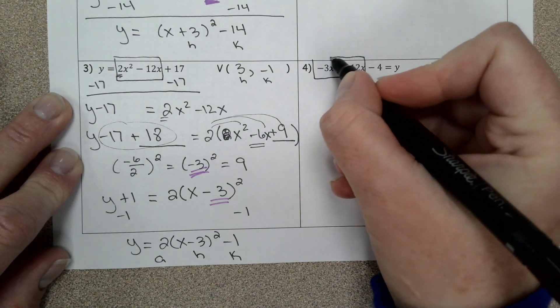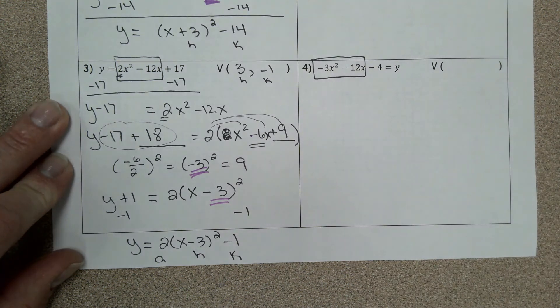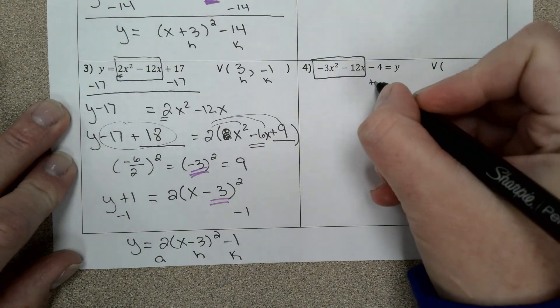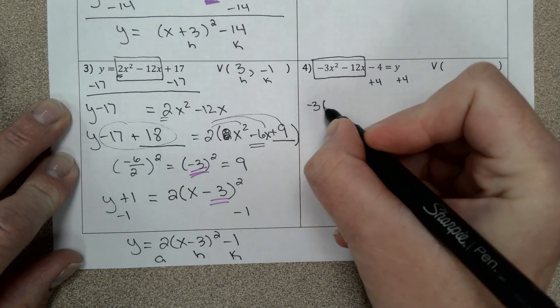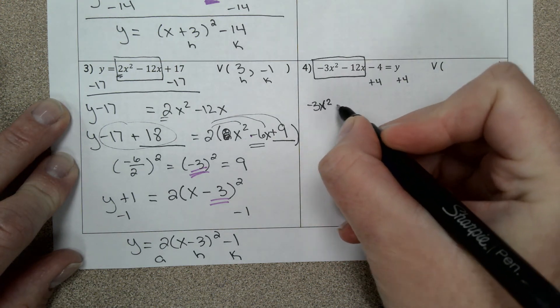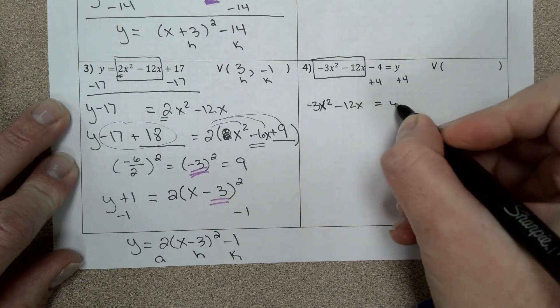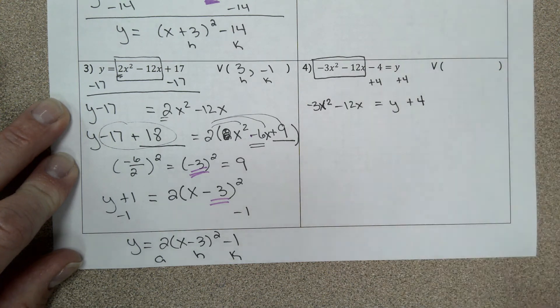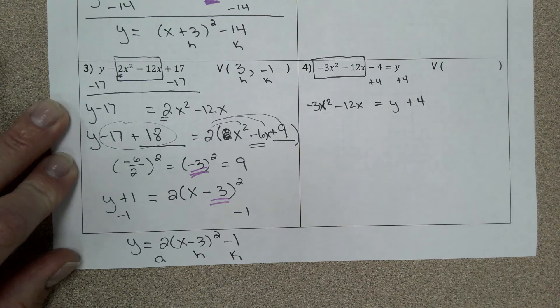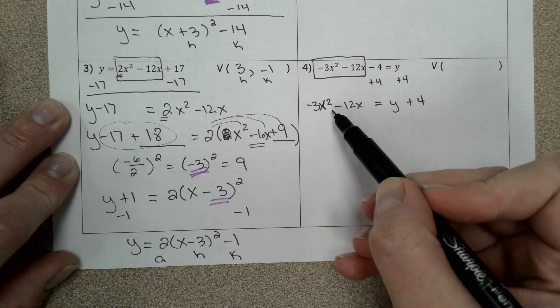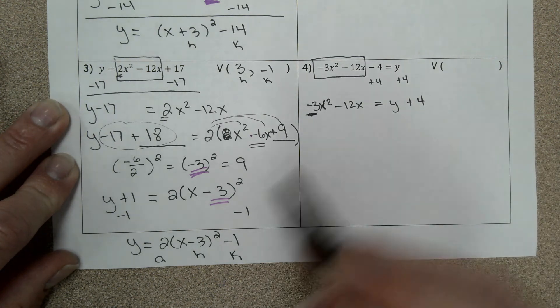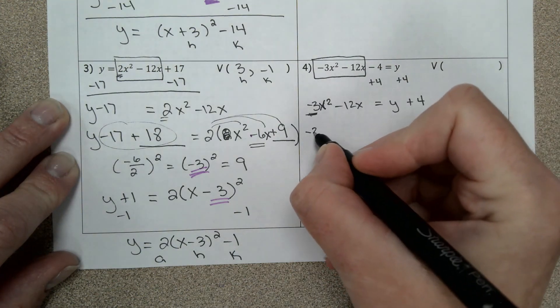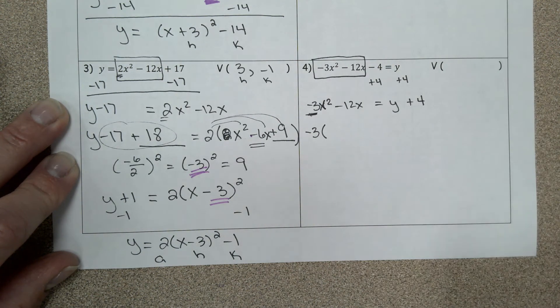Number four, we have the y on the right side. It's okay if that bothers you, you can switch it around. Step number one, isolate your x² and your x term. So that means I'm going to add the 4 to the other side. Now I'm on step 2, on the quadratic side you need a leading coefficient of 1. Right now I have a leading coefficient of negative 3, and the instructions say factor it out.